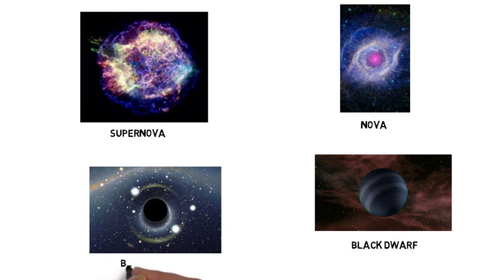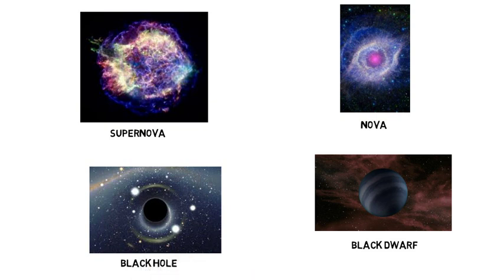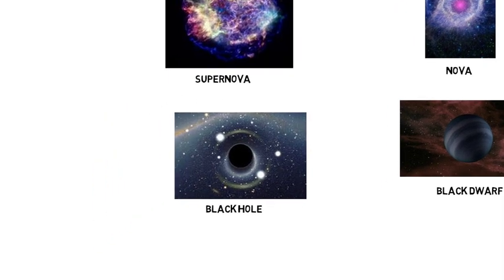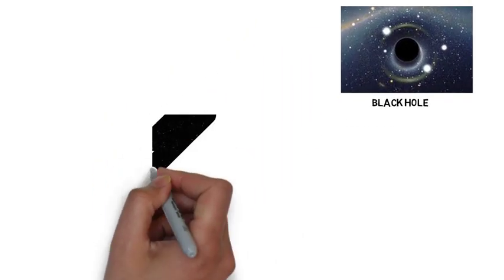The life cycle of a larger star after the supergiant stage is quite similar to that of a sun-like star. However, a black hole is formed instead of a black dwarf.